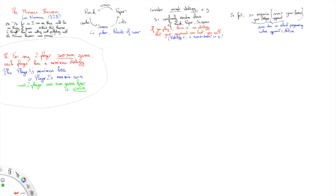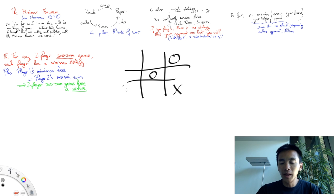So, for instance, tic-tac-toe has a value of zero. If both players play the Minimax strategy, then the game will end with a draw.